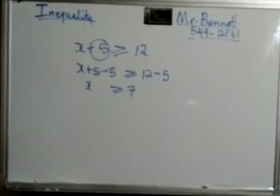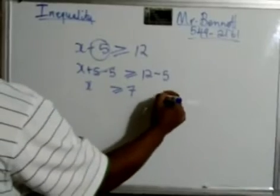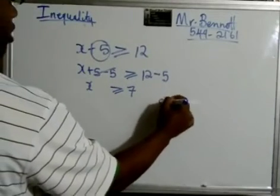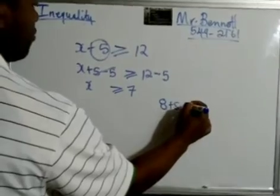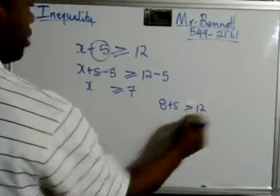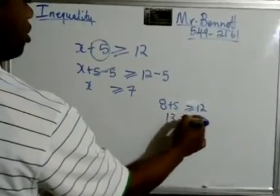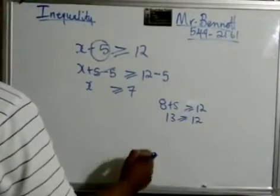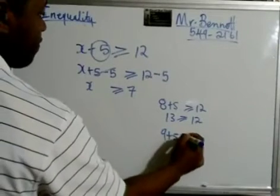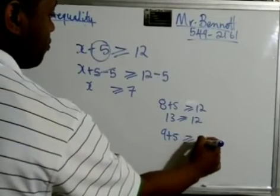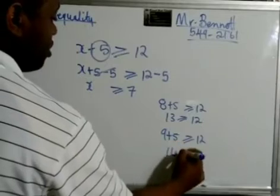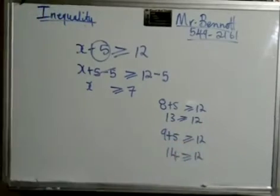So it means that for all the values greater than 7 or equal to 7, let's say we tried 8. 8 plus 5 is greater than 12, right? Greater than or equal to 12. See, 8 plus 5 is 13. 13 is indeed greater than, let's just try 9. 9 plus 5. 9 plus 5 is 14. So all of these are possible answers. So that's why I say it's a range of values, not just one.